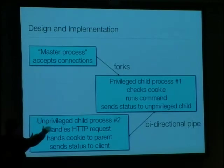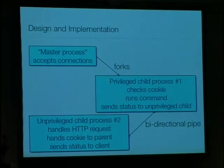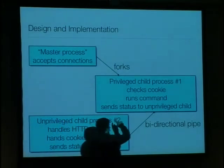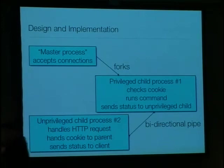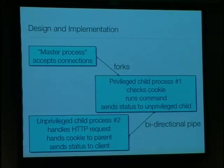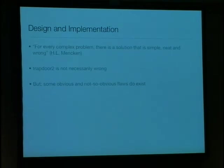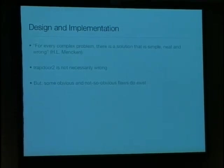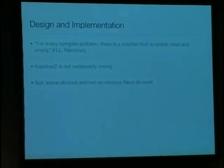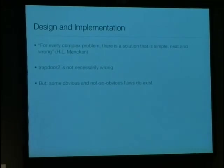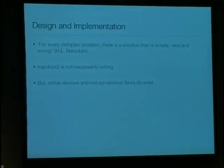We used this two-stage approach because you obviously cannot interact with the client — who is the potential attacker — using a root process. And you need root permissions to run the command. So it's really the naive approach. And of course, this famous quote: "For every complex problem there is a solution that is simple, neat, and wrong." Trapdoor 2 is not really wrong, but when we looked at it more closely after writing the first version, we found some obvious and not-so-obvious flaws, and then implemented code to prevent certain attacks.